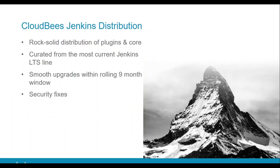Let's start with the Jenkins distribution itself. It's a rock-solid distribution of plugins and core — we've hardened it and made sure the plugins work together. We combine those into what we call an envelope that's issued on a monthly basis, a four- to six-week cadence. It's taken from the most current Jenkins LTS line available that's stable. We also endeavor to allow subscribers to upgrade as long as they're within a rolling nine-month window of the last couple of releases.